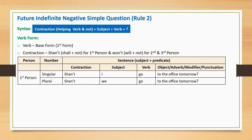First person singular: 'Shan't I go to the office tomorrow?' This sentence begins with contraction 'shan't', followed by subject 'I', main verb 'go', and a question mark at the end. First person plural: 'Shan't we go to the office tomorrow?'